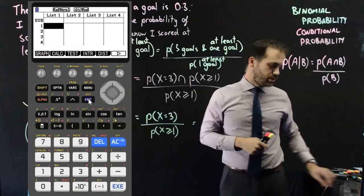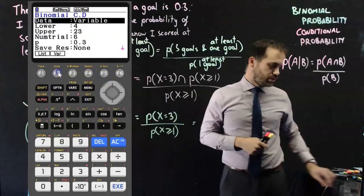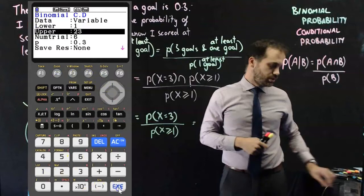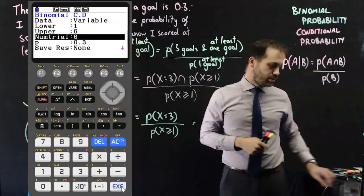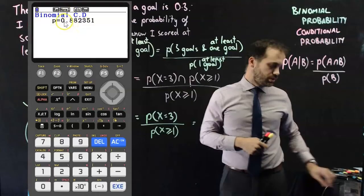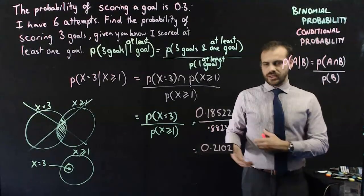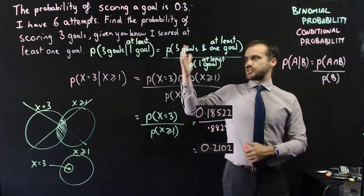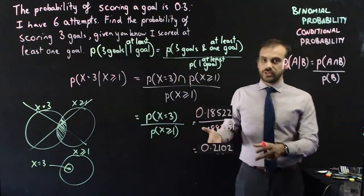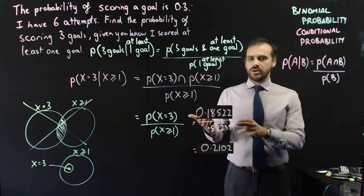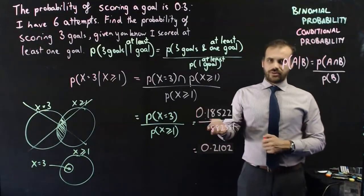And the next thing I needed to know was a binomial CD greater than or equal to one. So, one for my lower, six for my upper, the number of trials is six, probability of 0.3. And here is my answer for greater than or equal to one. What is that number? That is the probability of scoring three goals, given you know that I scored one goal. There is our final answer.